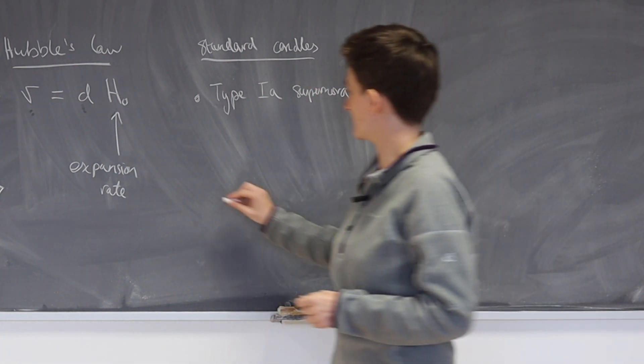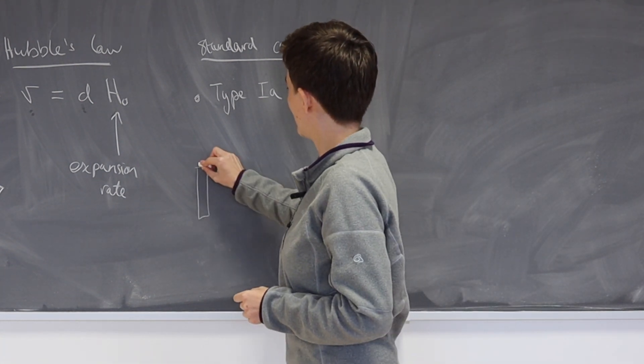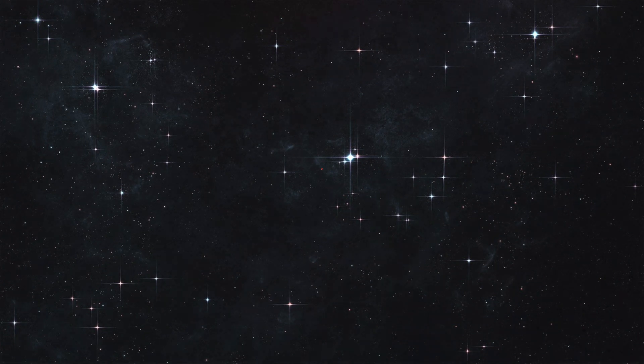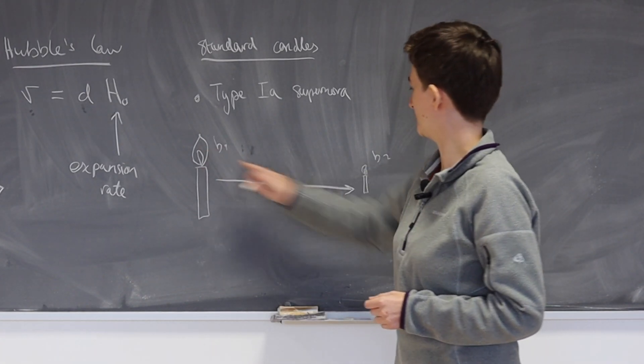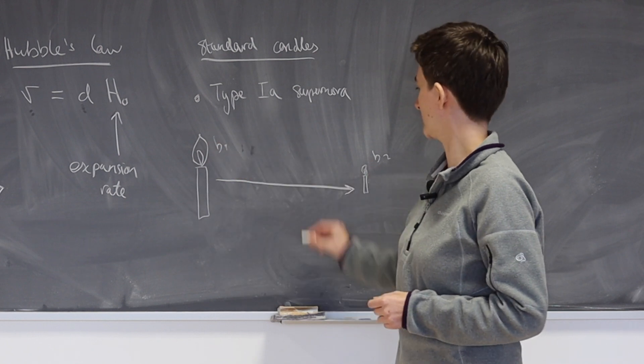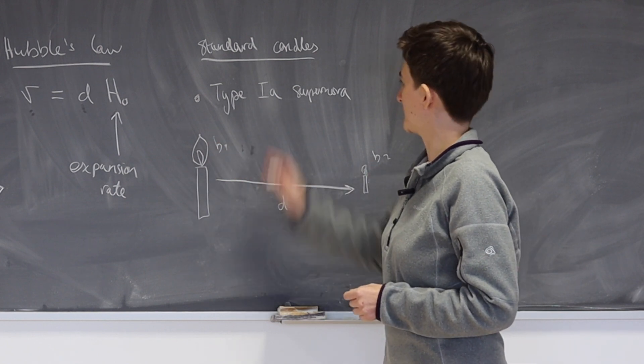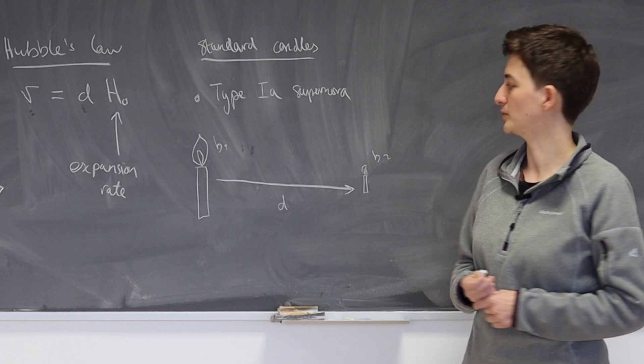So this is where the word candle comes in. You can imagine if you had a candle here close by to you and you knew the brightness of this candle, and then there was another candle very far away, which obviously would look dimmer. You could simply work out how far away it was if you know the relationship between the two brightnesses. And this is exactly what we do with type 1a supernovae in the universe.